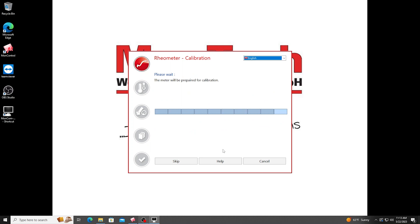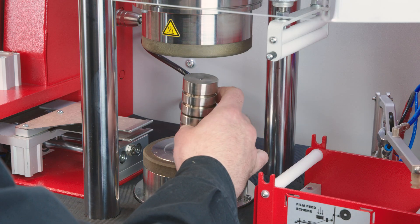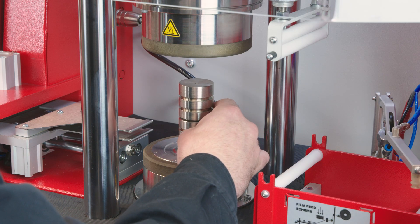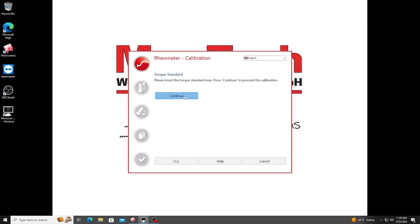The unit will then begin prepping itself for calibration and prompt you to place the torque calibration standard on the lower die. Please ensure the torque calibration standard is properly centered. Click continue once the torque calibration standard is in place and the calibration procedure will begin.